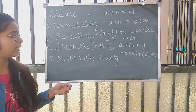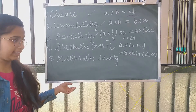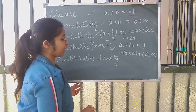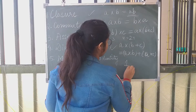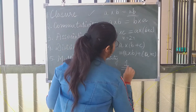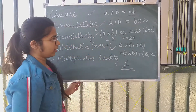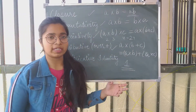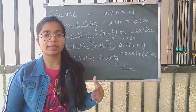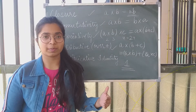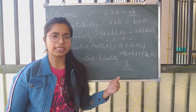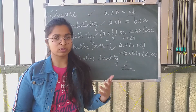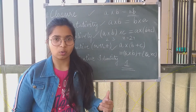Next comes multiplicative identity. The multiplicative identity of all numbers is always one. These are some properties of multiplication that help in solving many questions. I'll give you an example so you can understand how.